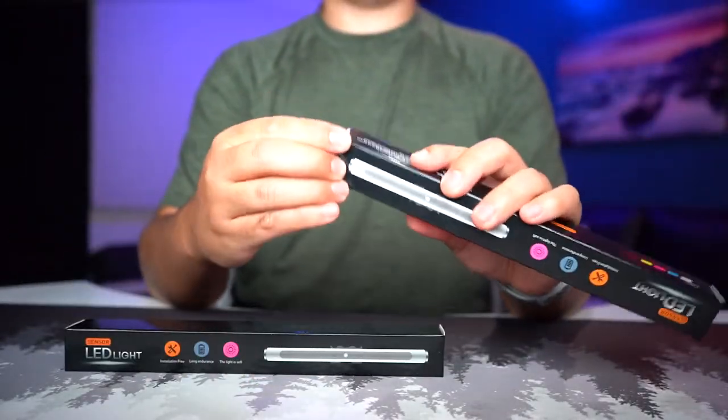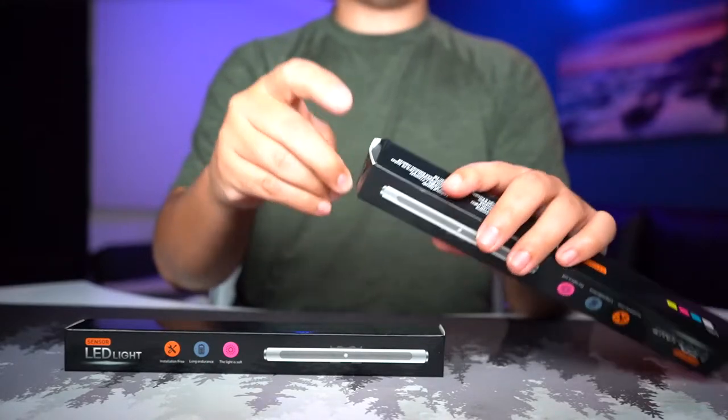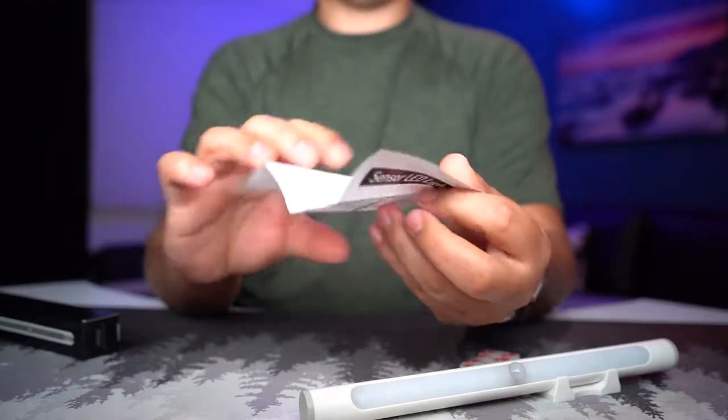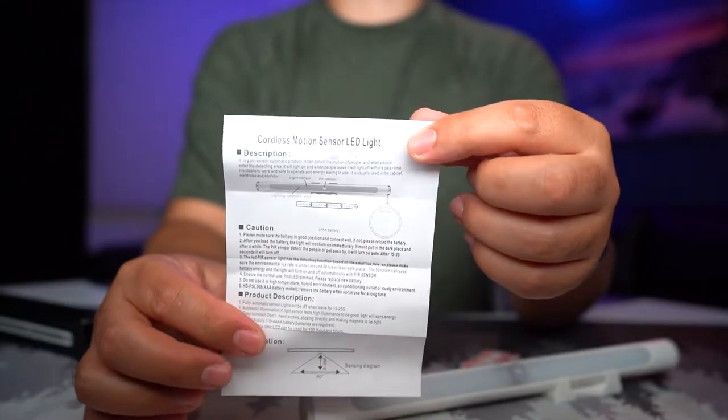And obviously it comes with two of them, but let's just open one up. Pull out of this little package here, and we're going to get the sensor LED, cordless motion sensor LED light bar.